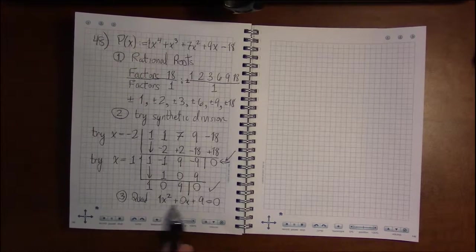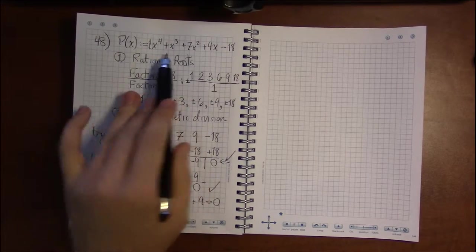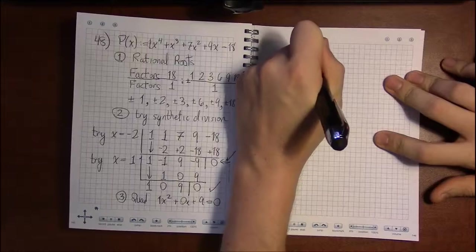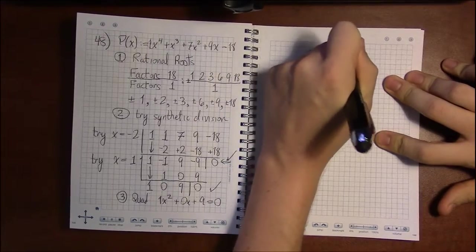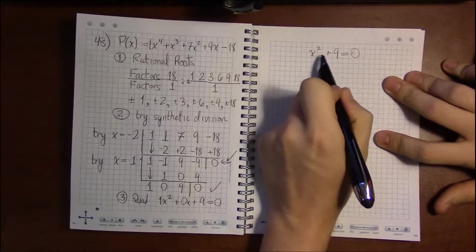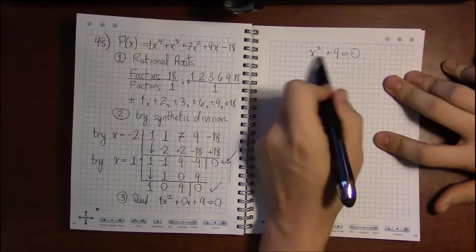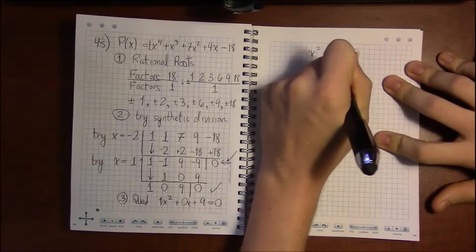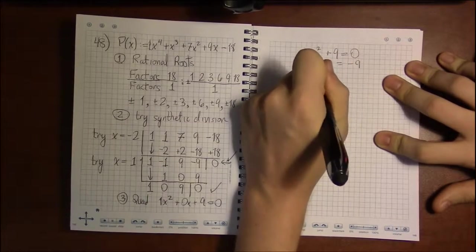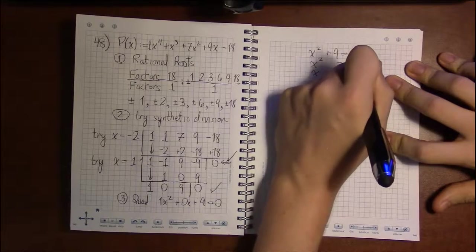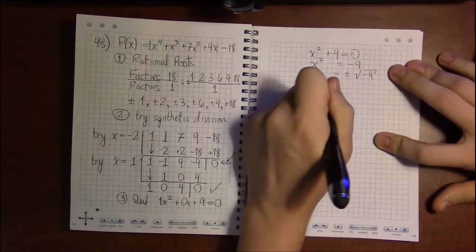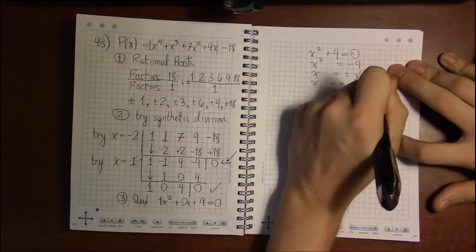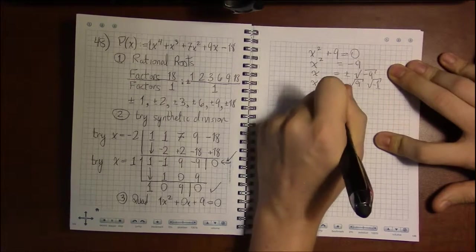This is just x squared plus 9 equals 0. I just have an x squared and no x. You could do quadratic formula with b equal to 0, but we can do something simpler. If we subtract 9 from both sides, then take square roots, we get x equals plus or minus the square root of minus 9. Square root of minus 9 can be written as square root of 9 times square root of minus 1, which allows us to use complex numbers.